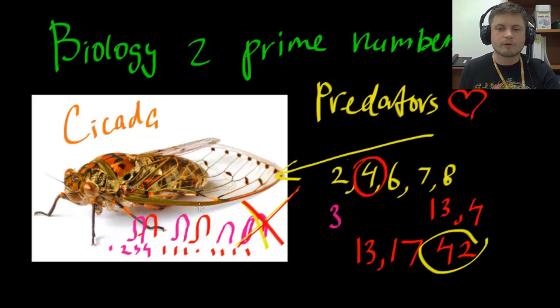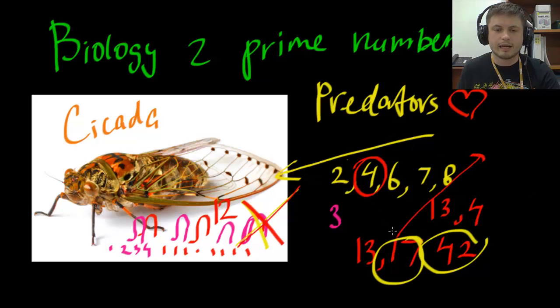However if the number was only 12, so here it's 12 years, and cicadas that have a 17 year cycle will only be in danger every seven times four, I think it's every 68 years. In other words, for 68 years they don't have to worry about being eaten by predators.